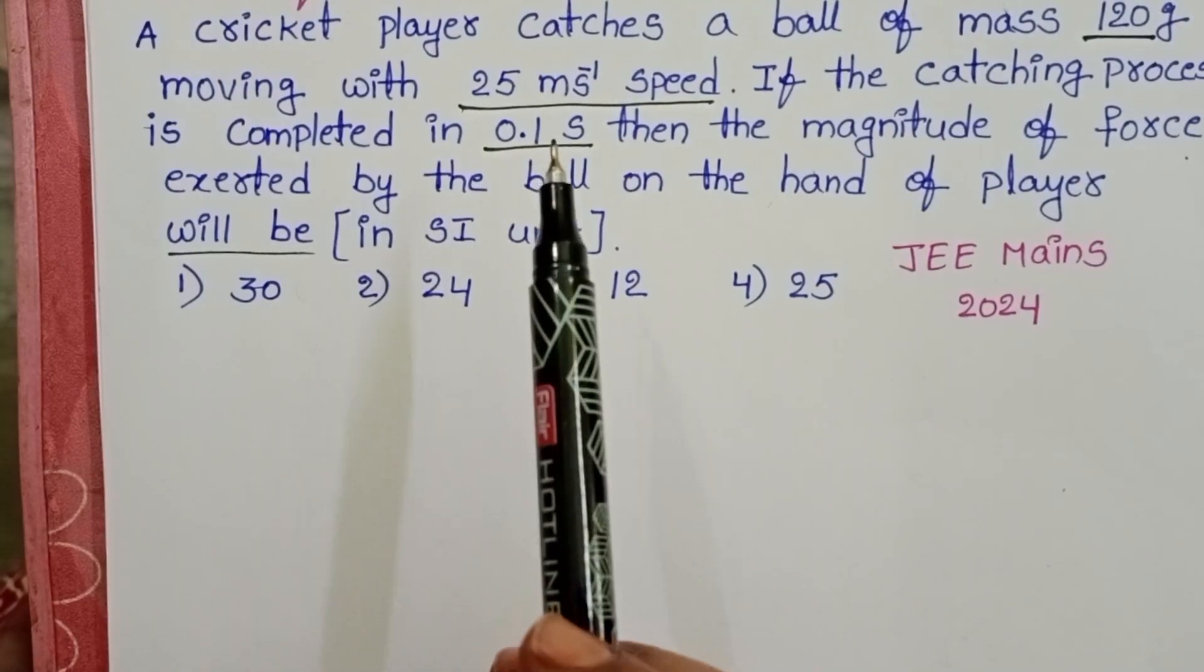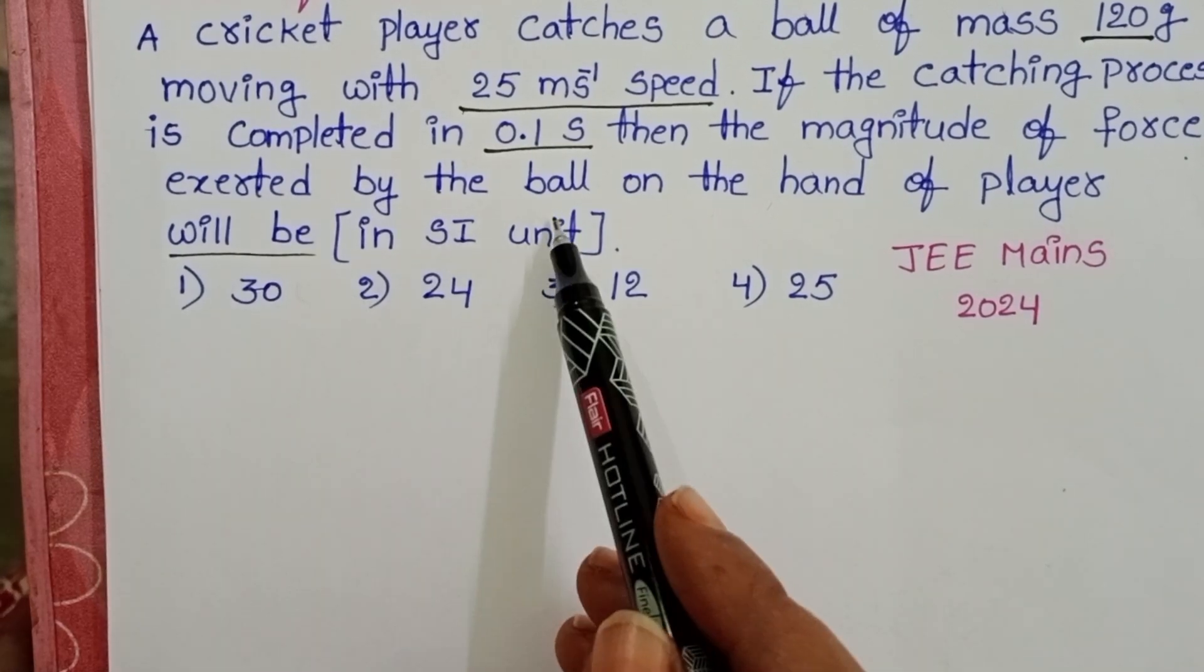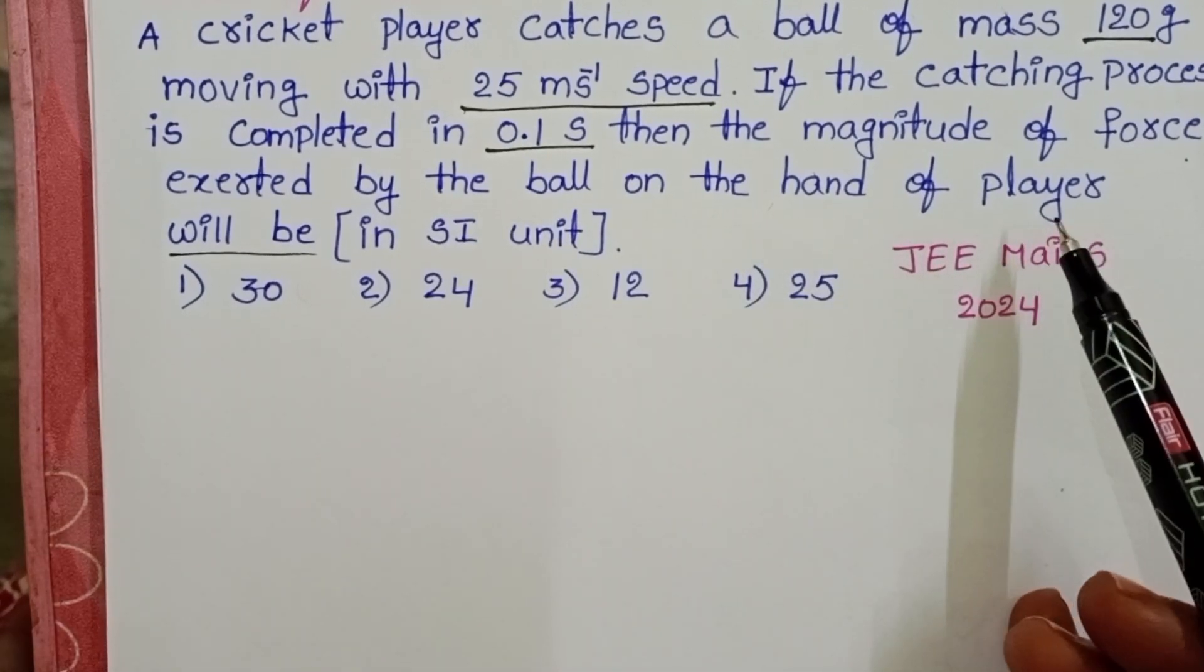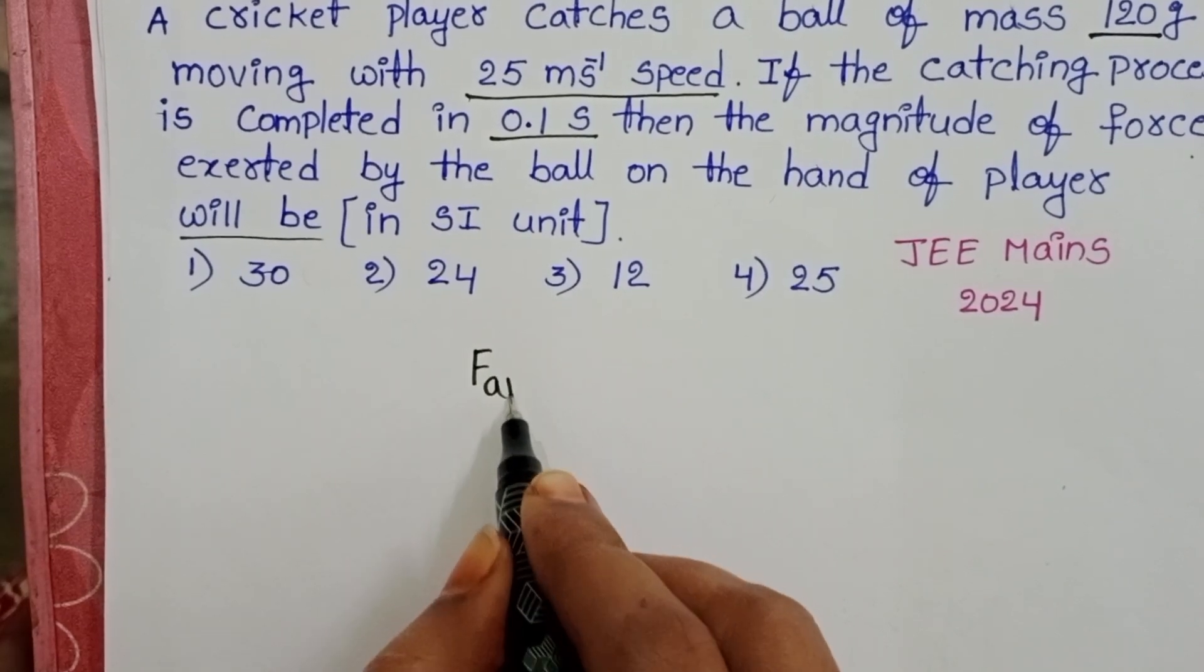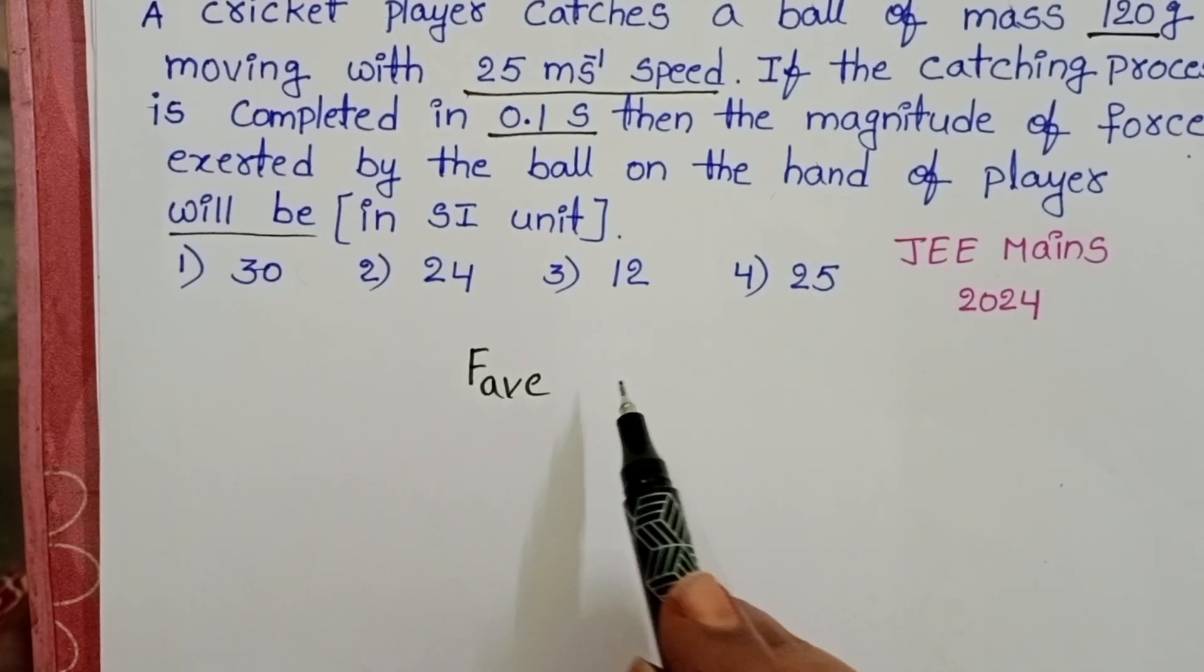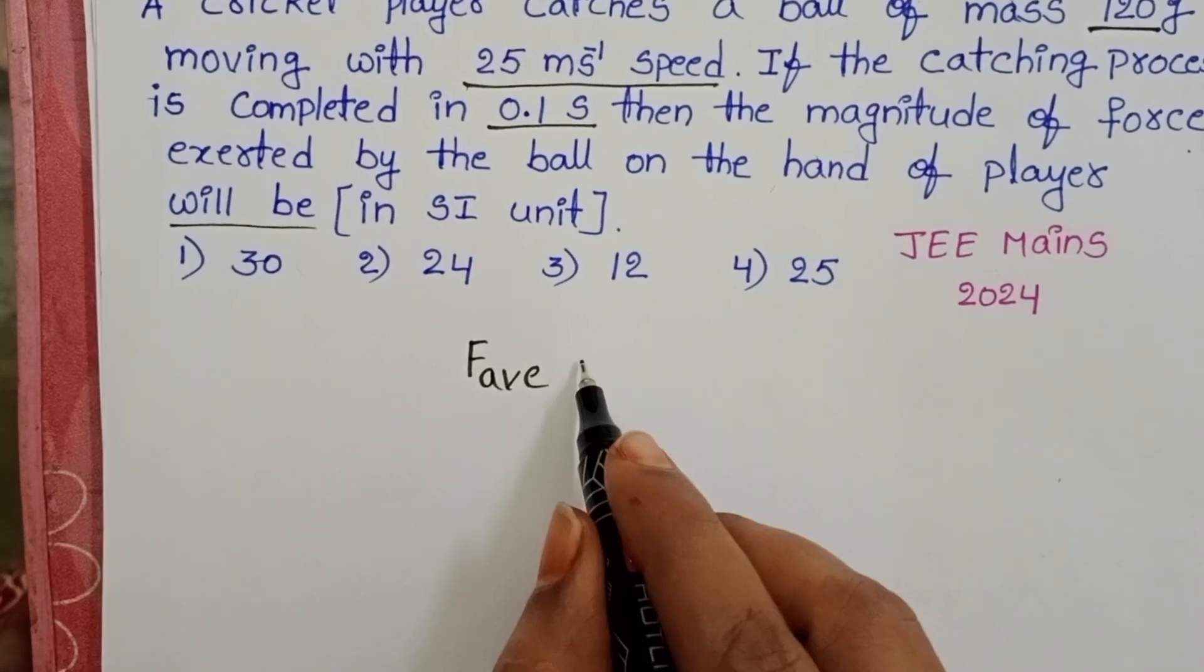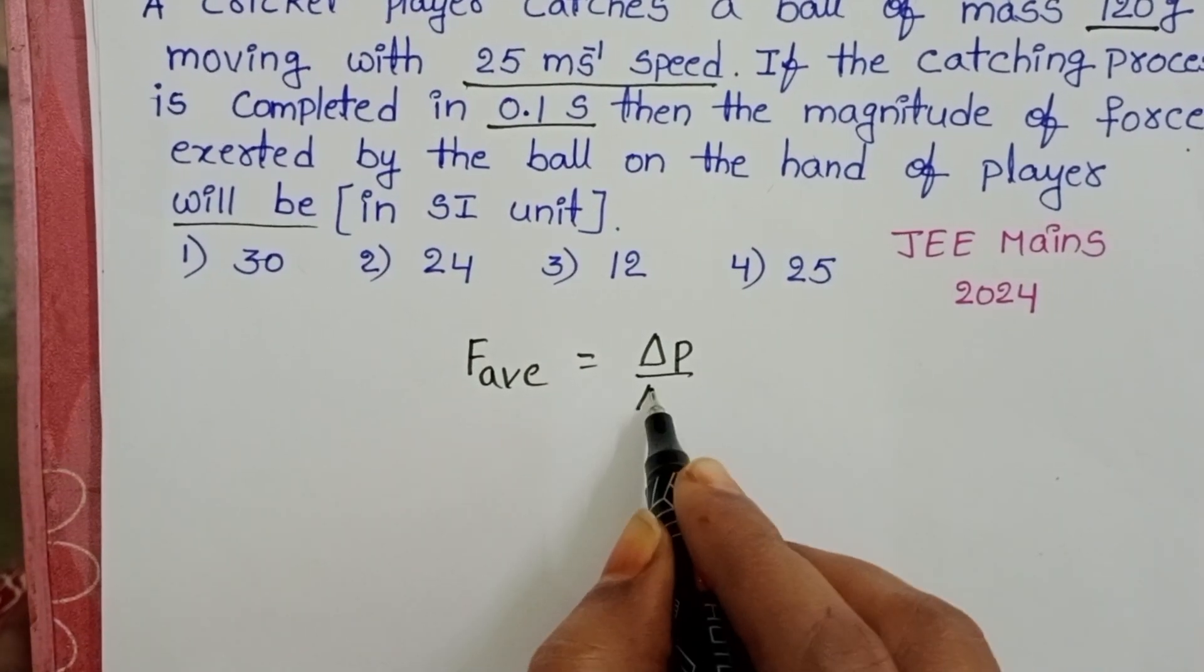In the given question, we have to find out the magnitude of the force exerted by the ball on the hand of the player. That is nothing but the average force. We know rate of change of momentum equals the force. So, average force equals change in momentum by time.